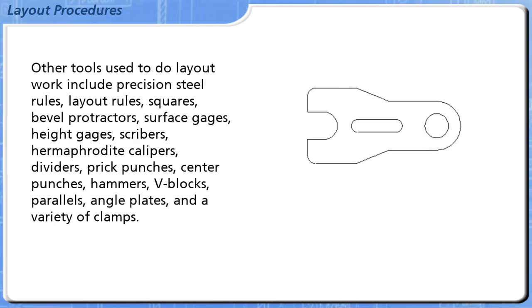Other tools used to do layout work include precision steel rules, layout rules, squares, bevel protractors, surface gauges, height gauges, scribers, hermaphrodite calipers, dividers, prick punches, center punches, hammers, V-blocks, parallels, angle plates, and a variety of clamps. Here is the sequence for laying out this part.